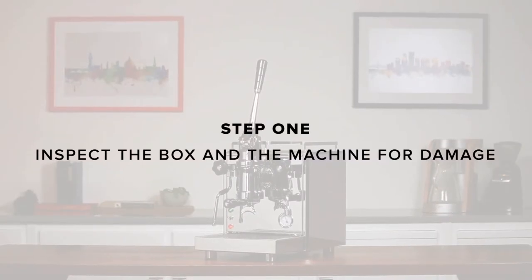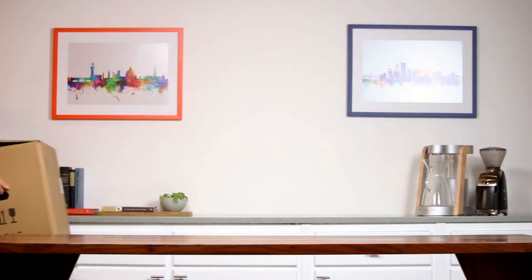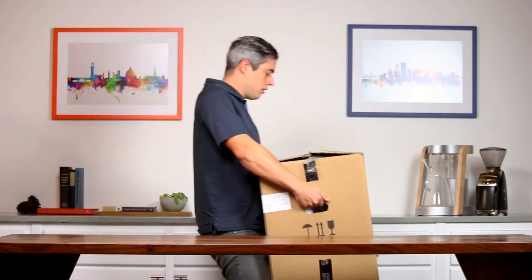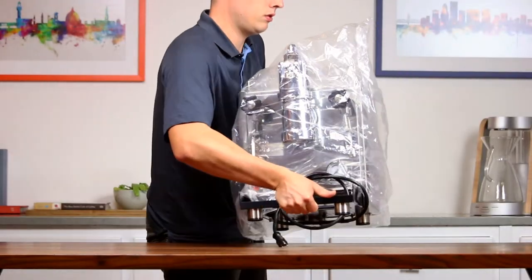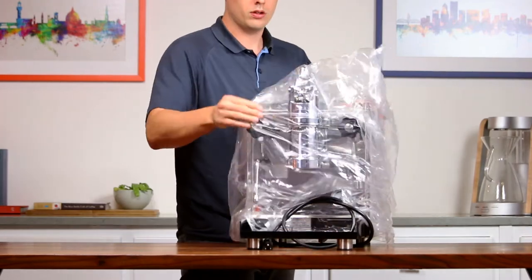Step 1. Inspect the box and the machine for damage. Remove the machine from the box. We recommend saving all of the packing materials and boxes. Set the machine on a stable and level surface.